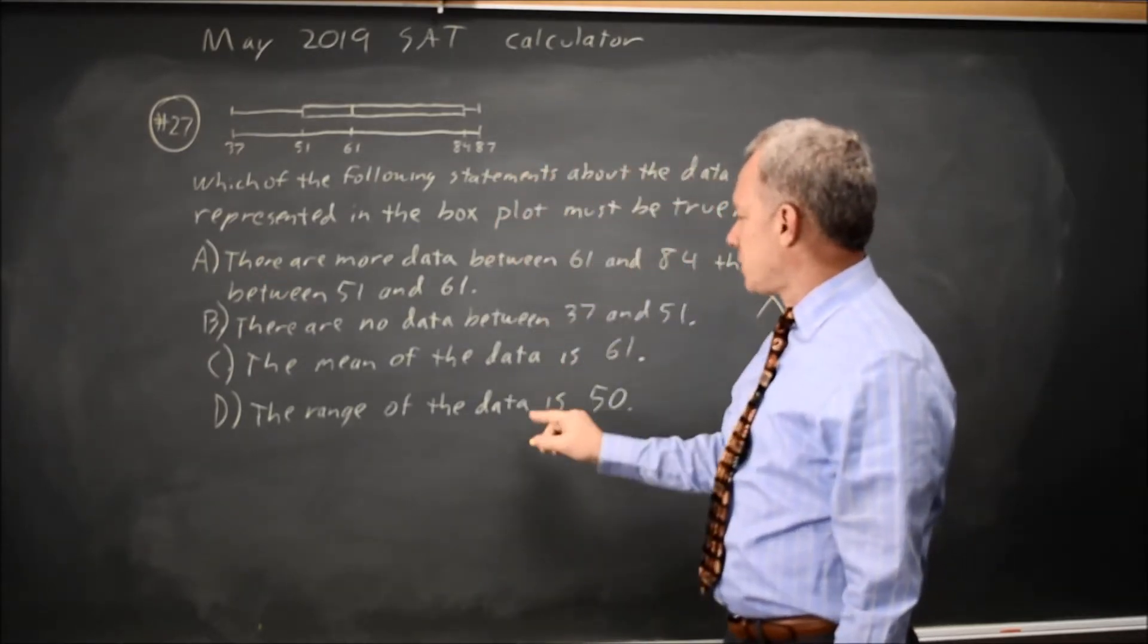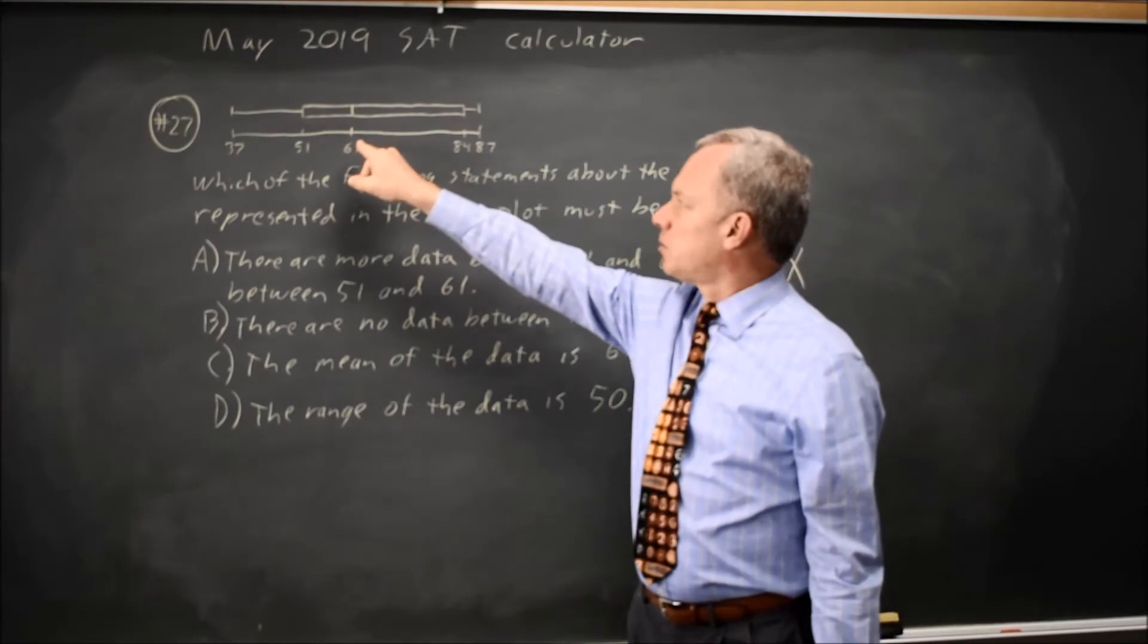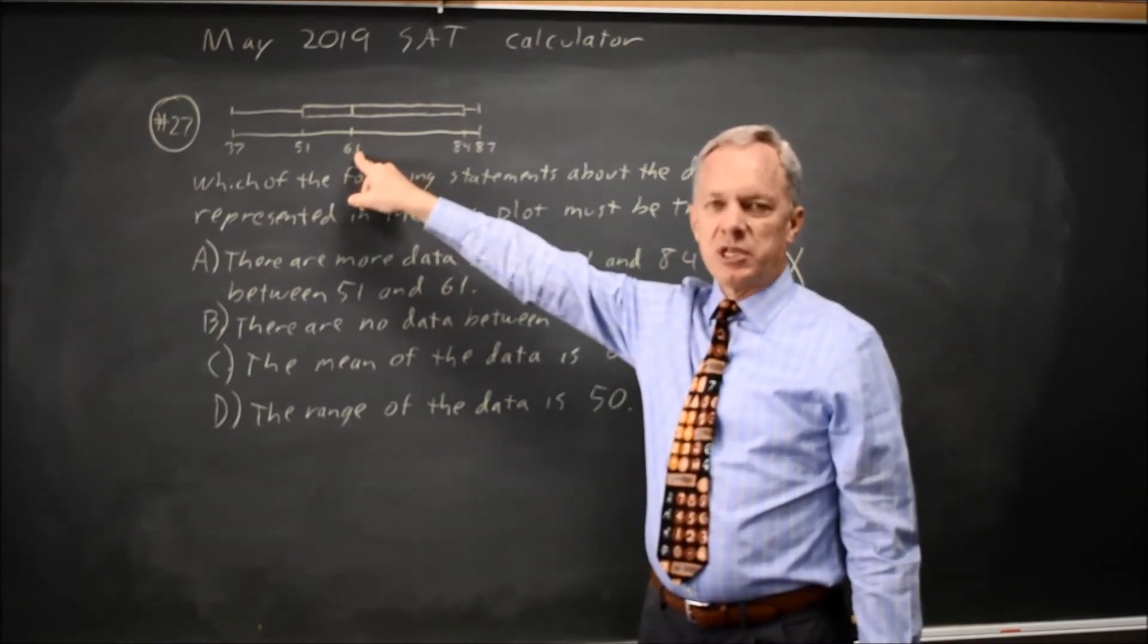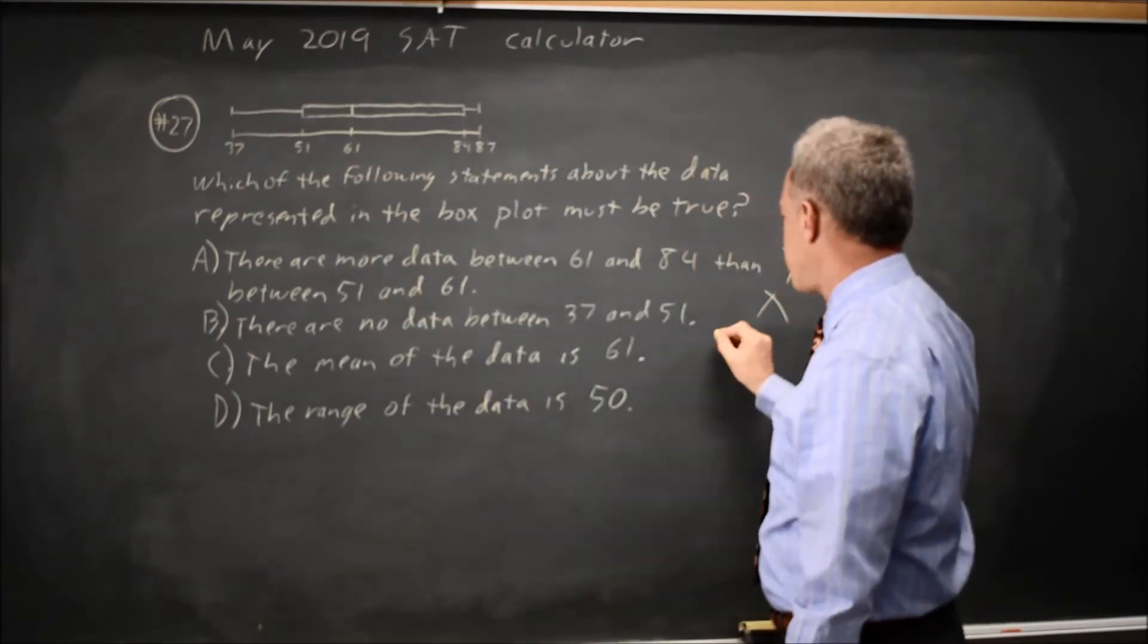Choice C, the mean of the data is 61. While that's possible, it's not guaranteed, it's not something that must be true. The median is 61, the middle observation.